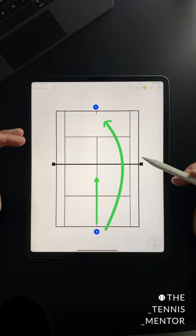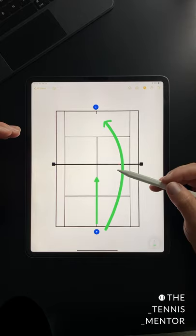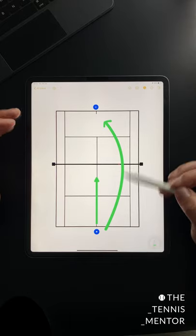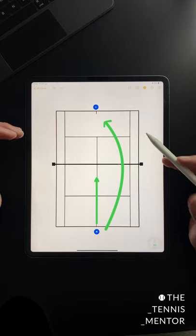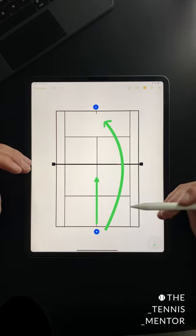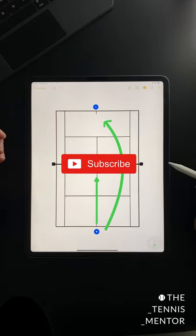You can either play with the rule that the winner of the point feeds the next point, or you can play first to seven and then change feeders. Not only is this drill great for your decision making and executing the approach and volley, but also it's a really good workout.